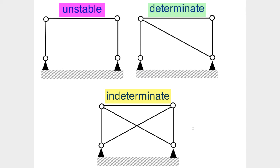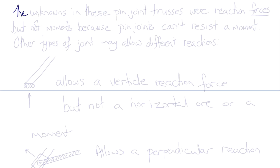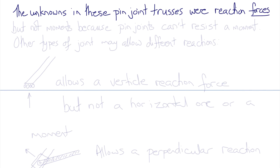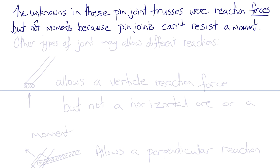Indeterminate doesn't mean the system is not in static equilibrium — it just means the equations of force and moment balance alone are insufficient to solve for the unknown reactions and forces. In these pin-jointed trusses, the unknowns were reaction forces but not moments, because pin joints can't resist a moment, similar to joints in our body that require muscles to keep them stable.